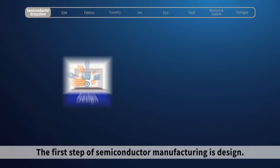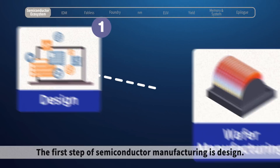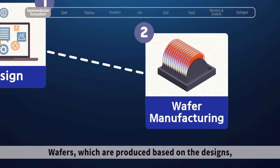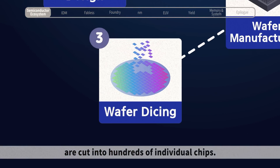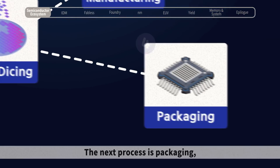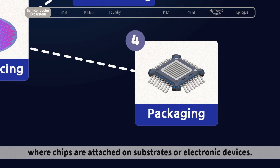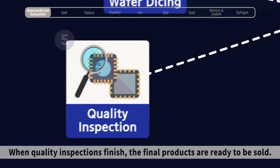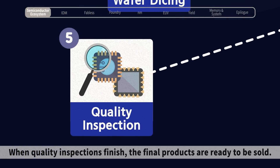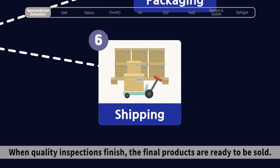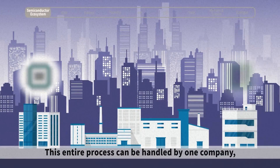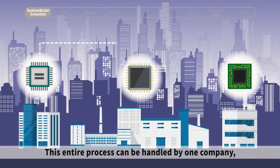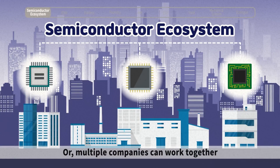The first step of semiconductor manufacturing is design. Wafers, which are produced based on the designs, are cut into hundreds of individual chips. The next process is packaging, where chips are attached on substrates or electronic devices. When quality inspections finish, the final products are ready to be sold. The entire process can be handled by one company, or multiple companies can work together in the semiconductor ecosystem.